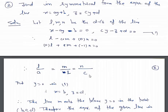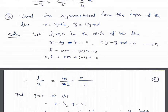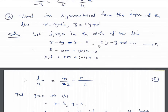Second example: find in symmetrical form the equations of the line x equals ay plus b, z equals cy plus d. The first equation can be written as x minus ay minus b equals 0, and the second as cy minus z plus d equals 0. Suppose l, m, n are the direction cosines of the line; the line lies on both planes, so the normals to these planes are perpendicular to the line.